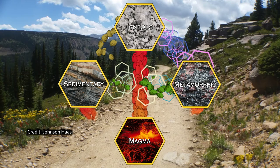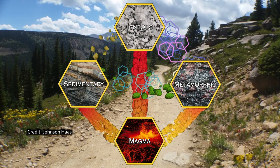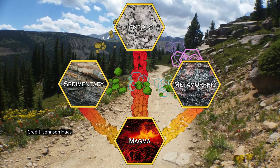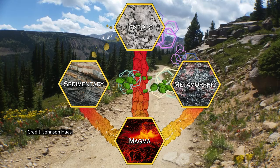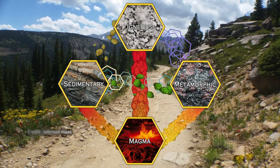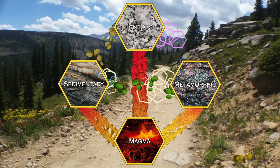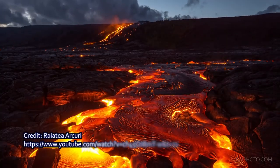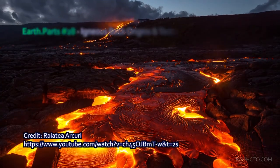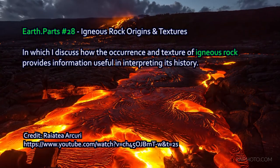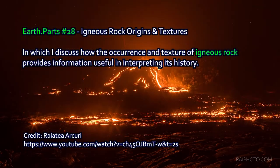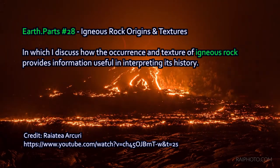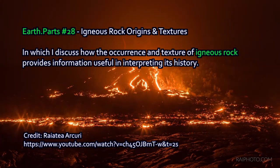In a previous episode, I talked about the rock cycle, the generalized process by which rocks change from one type into another. It covers a lot of different kinds of processes, like weathering, like metamorphic change, or like the melting or the freezing of molten rock. In this episode, I want to talk about igneous rock, possibly the most fundamental of the three major rock types: igneous, sedimentary, and metamorphic.